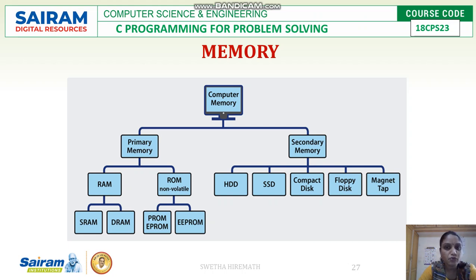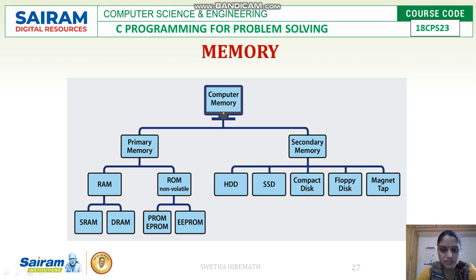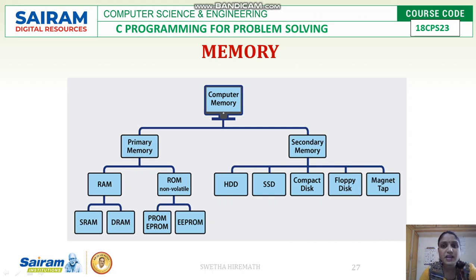ROM comes in different types: EPROM (erasable programmable read-only memory), EEPROM (electrically erasable programmable read-only memory), and UV EEPROM (ultraviolet electrically erasable programmable read-only memory). Secondary memory includes hard disk drives, SSDs, compact disks, floppy disks, magnetic tapes, and optical disks. Secondary memory can be detached from the computer and is used when large amounts of data need to be stored.